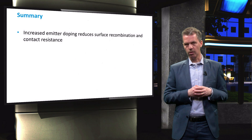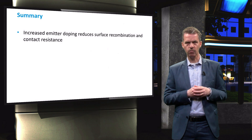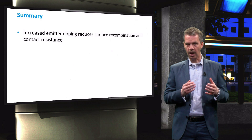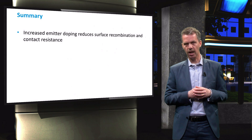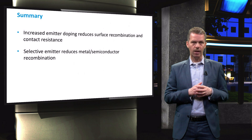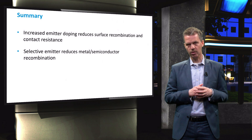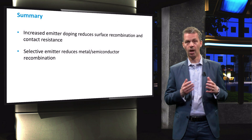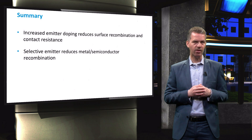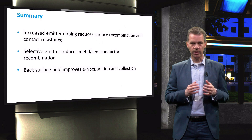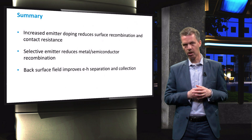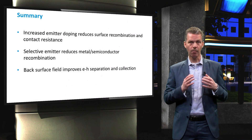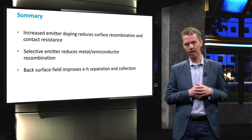In summary, we have shown that a higher emitter doping concentration will result in lower surface recombination through a reduced minority carrier concentration, and will lower the contact resistance between the metal contact and the silicon. A selective emitter reduces recombination losses at the metal-semiconductor interface by implementing a heavily doped region just below the contact. In addition, the contact area between the metal and the silicon is reduced. Finally, we have discussed the introduction of a back surface field to improve electron and hole separation and facilitate improved collection of holes at the back contact by reducing the recombination rate at the back metal contact.